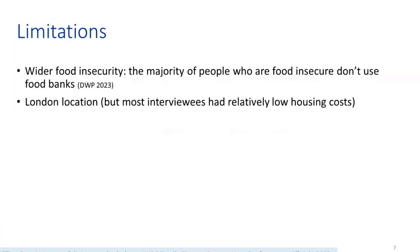The main limitations are: when looking at wider food insecurity, the majority of food-insecure people don't actually use food banks due to inaccessibility or stigma, so this data relates only to food bank users. It was also just one location in London, where people tend to have higher housing costs — though this was mitigated because most interviewees couldn't afford private renting or mortgages and were in social housing or various forms of homelessness.